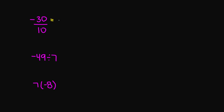Let's look at these examples. Negative 30 divided by 10 gives a negative 3. Negative 49 divided by 7 gives a negative 7 — we have a negative and a positive 7, so you get a negative answer. And 7 times negative 8 — you have a positive 7 and a negative 8, so you're going to get a negative answer. Your answer here is negative 56.